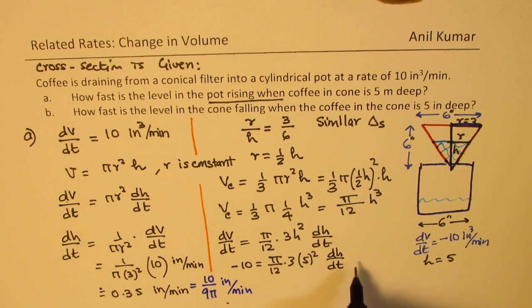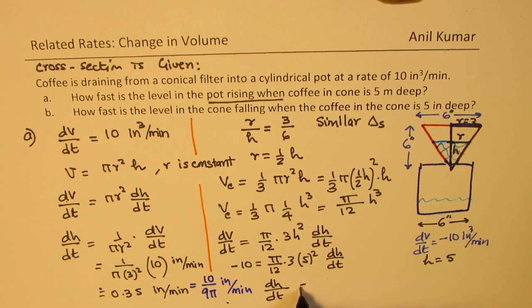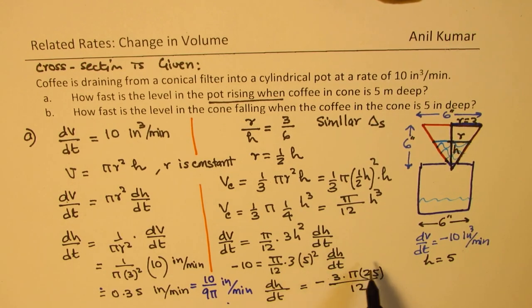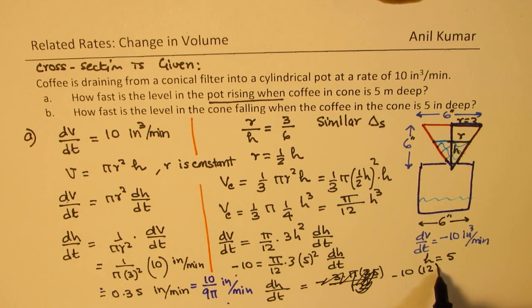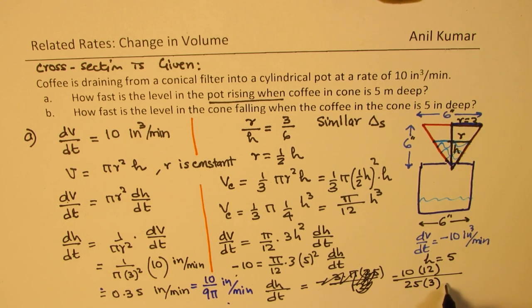So just rearrange and get your answer. So we get dh/dt is equal to, we get this, we get minus definitely. And here we can write this as 3 times π times 25, which is 5 squared, over 12. So this will come in the denominator. So dh/dt will be, 12 will go in the numerator. So dh/dt will be -10 times 12 divided by 25 into 3 pi.